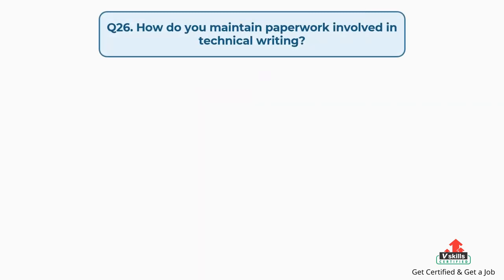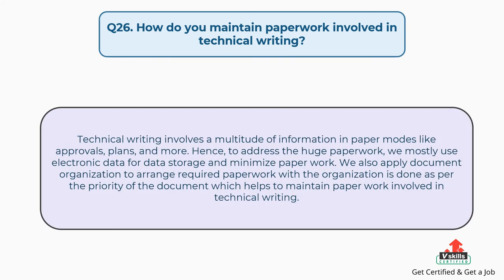Question number twenty-six: how do you maintain paperwork involved in technical writing? Technical writing involves a multitude of information in paper modes like approvals, plans, and more. To address the huge paperwork, we mostly use electronic data for storage and minimize paperwork. We also apply document organization to arrange required paperwork as per the priority of the document.